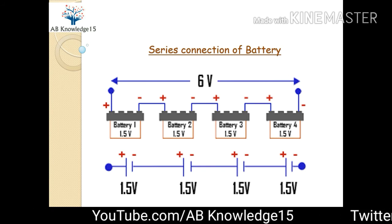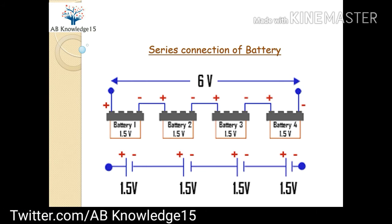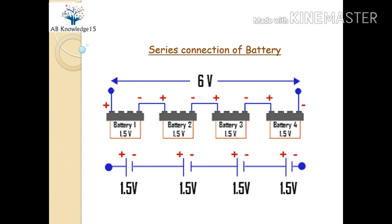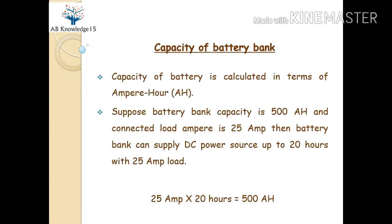Here there are four batteries connected in series. Each battery has two terminals: one positive terminal and one negative terminal. The negative terminal of the first battery is connected with the positive terminal of the second battery, and likewise the third and fourth batteries are also connected in the same pattern. So 1.5 volts of each battery adds up — 1.5 volts times four — giving a total voltage of 6 volts from the battery bank, as you can see. As per your requirement, you can connect any number of batteries to get the desired voltage output.